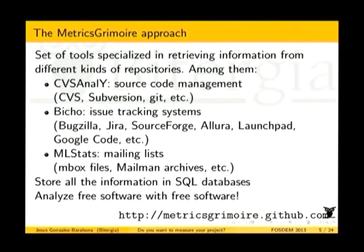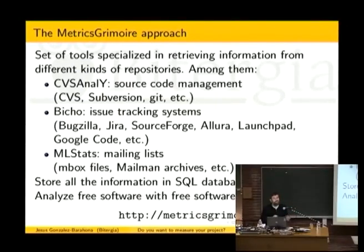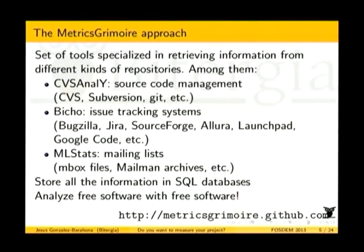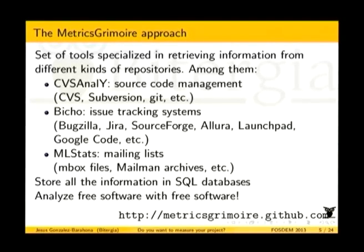Metrics Grimoire downloads information from repositories and puts it into a database. It is mainly three tools: CVSAnaly, which deals with source code management systems — right now it can work with CVS, Subversion, and Git, with limited support for Bazaar; Bicho, which works with the main issue tracking systems; and ML Stats, which works with mailing lists in mbox format if they are local, or Mailman archives if they are remote. Basically we put all of that into a MySQL database.